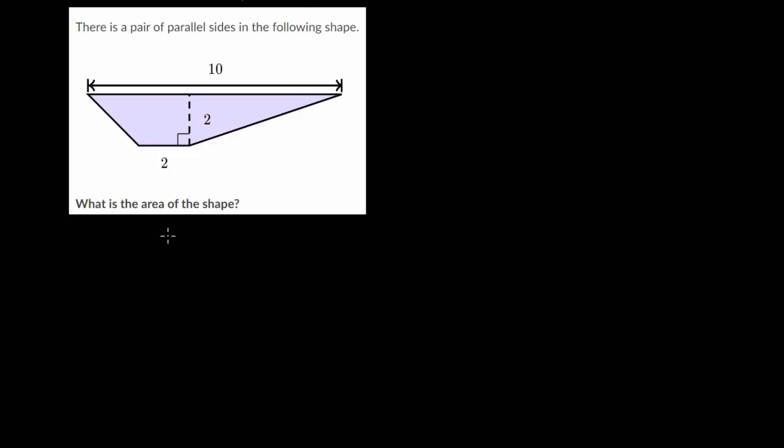So let's look at a couple more examples of finding the area of composite shapes, but specifically we're going to look at shapes that are trapezoids. And remember a trapezoid is a quadrilateral, a four-sided shape, that has one pair of parallel sides.